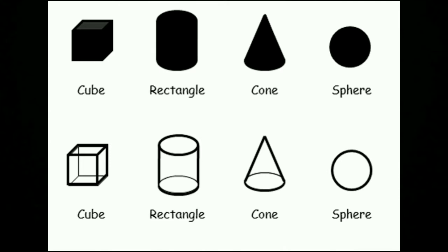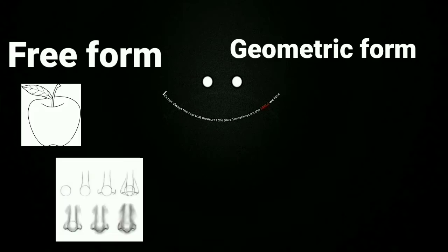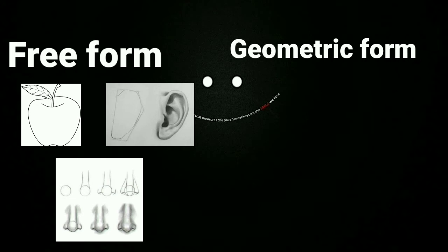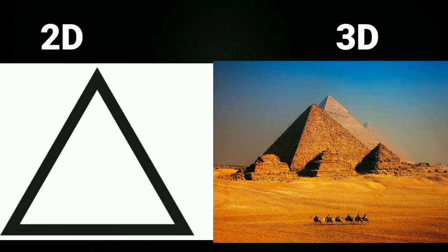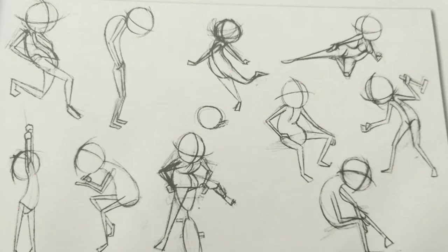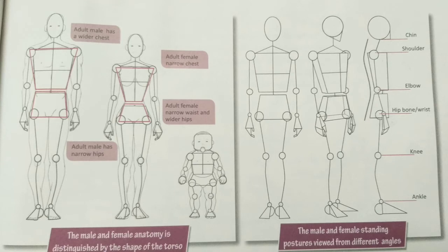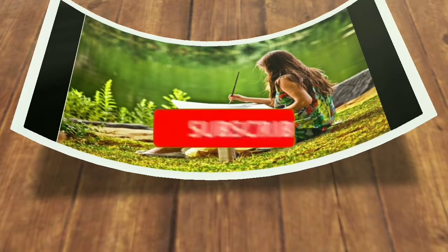Shape and form in art is easy to understand. There are two types of form: free form and geometrical form. Apple, ear, nose — all these are free forms. Triangle, square, rectangle — these are called geometrical forms. A triangle is a two-dimensional form, while a pyramid is a three-dimensional character. Before learning anything, we should learn to draw the forms of objects so we can draw anything very easily. I will teach you that in upcoming videos — stay connected by subscribing to our channel.